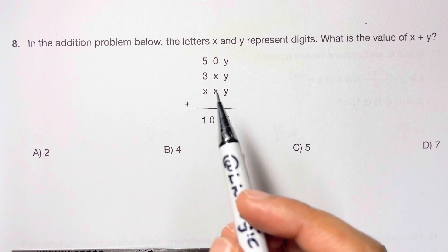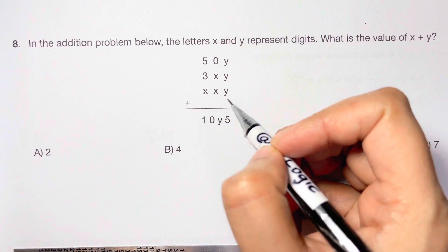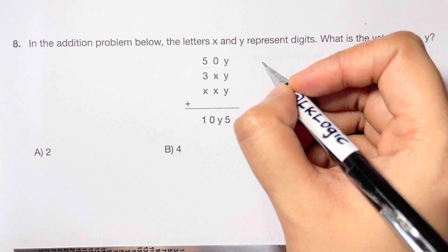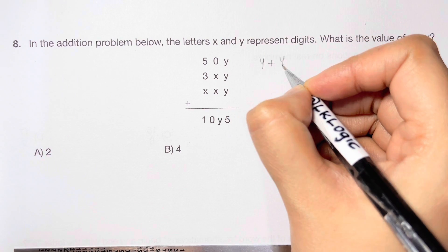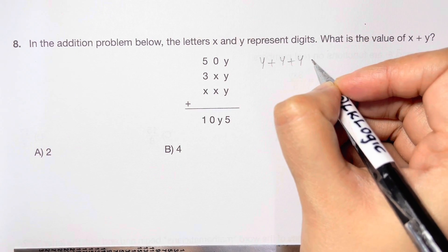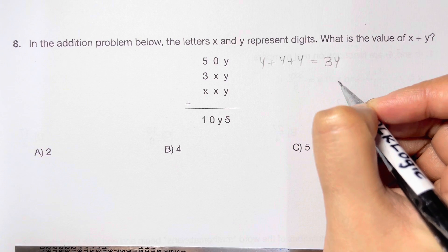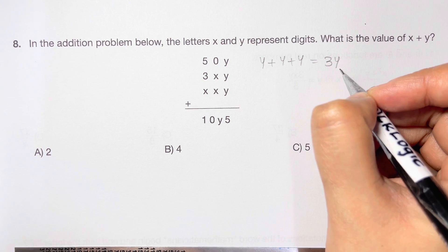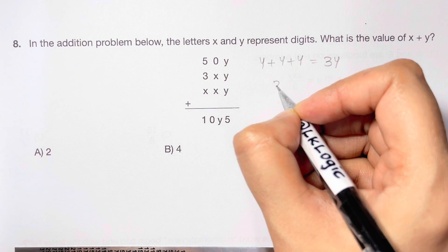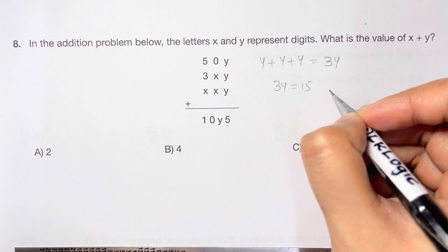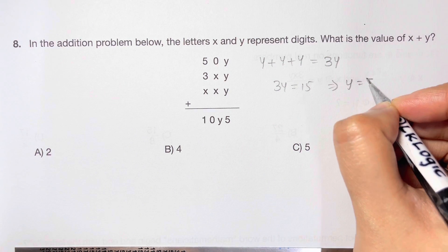So here, what we're going to do is, we are going to look at the units digits. y plus y plus y is equal to 3y, which is only possible if 3y is equal to 15. So y is equal to 5 then.